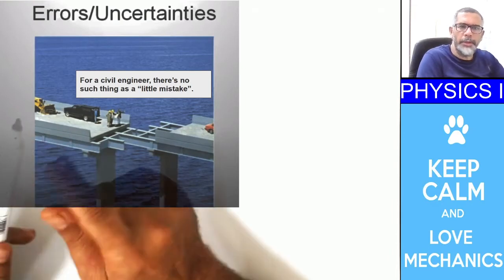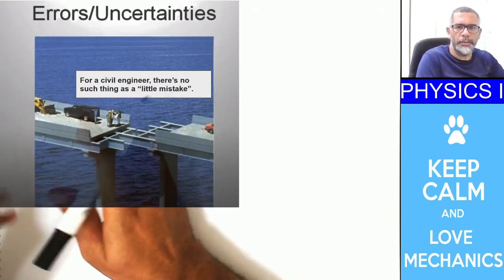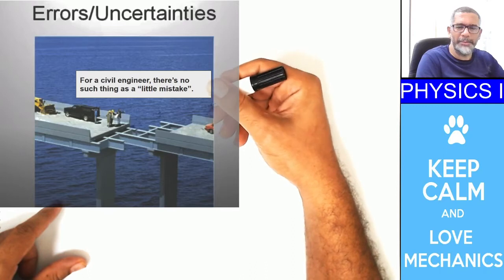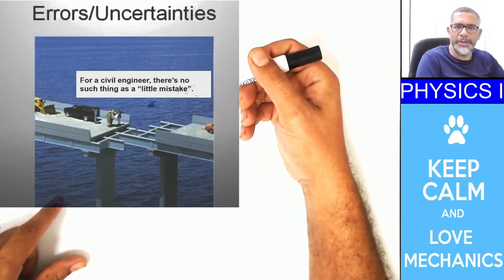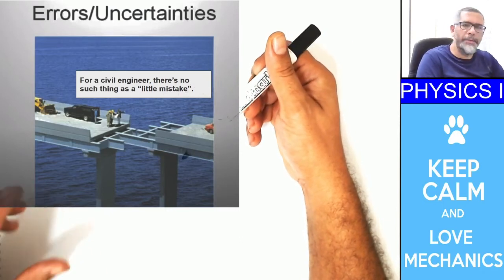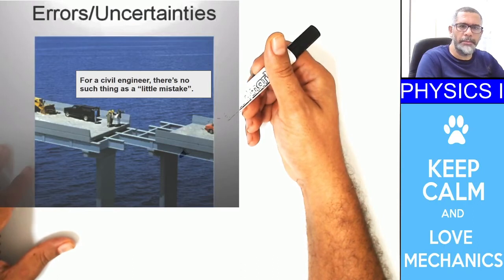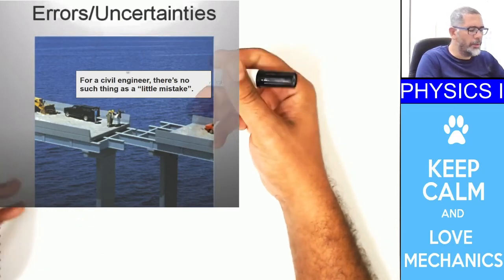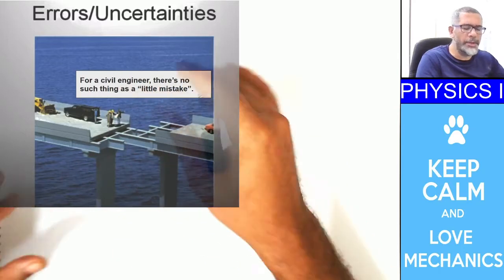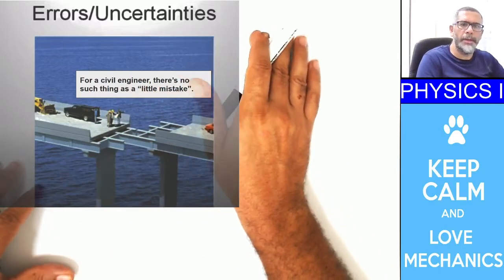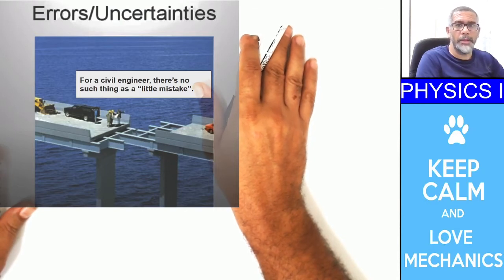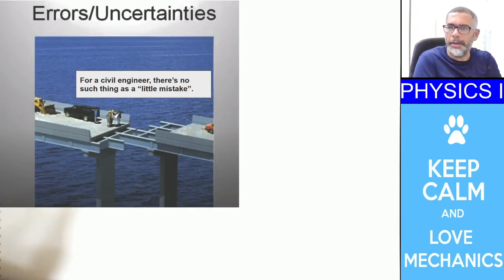We have to understand these uncertainties. For example, these civil engineers are constructing a bridge, but there is some mismatch. As it says, there is no such thing as a little mistake. If you don't understand the limits of your measurements, you always end up with such things in engineering. This is not unique to civil engineers — all types of engineering deal with these uncertainties. To understand these limitations, we have to understand errors and uncertainties on a physical ground.